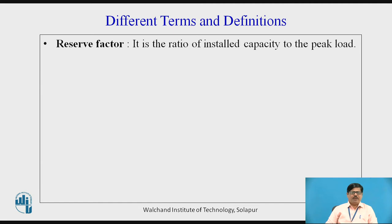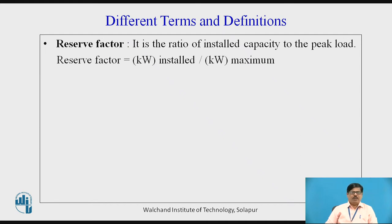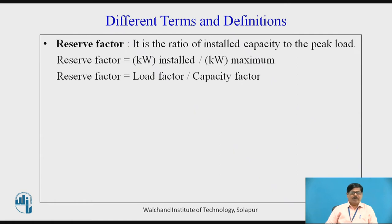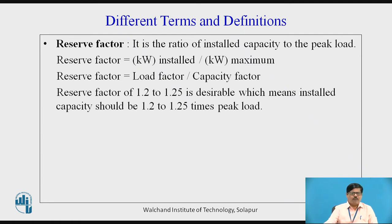The reserve factor is the ratio of installed capacity to the peak load. It can be expressed as kilowatts installed divided by kilowatts maximum utilized. If we divide the load factor by the capacity factor, we get the same expression — kilowatts installed divided by kilowatts maximum. Therefore, the reserve factor can also be expressed as the ratio of load factor to capacity factor. A reserve factor of 1.2 to 1.25 is desirable, meaning installed capacity should be 1.2 to 1.25 times the peak load so that the plant will not be overloaded.